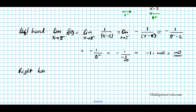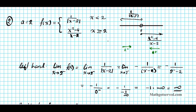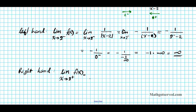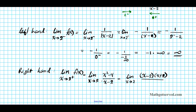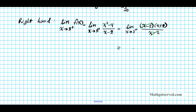For the right-hand limit, we have the limit as x approaches two from the right. Since we're approaching from the right, we use the function x squared minus four over x minus two. We're going to factor the numerator and reduce. Factoring gives us x minus two times x plus two over x minus two. If we plug in two directly we get zero in the denominator — but the discontinuity is removable, so we cancel x minus two. Then plugging in two from the right, we get two plus two, and the limit is simply four.